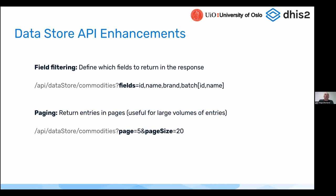The features we added were what we call field filtering. With field filtering, you can basically define which fields to return in the response on the API. This is more for app developers. It works now very much in the same way as the normal metadata API, allowing you to define which fields in the JSON object you would like to return using the fields parameter. So if you have a hypothetical commodities namespace in the API, you can now define that you would like to have the ID, name, brand, batch, and so on in the response.